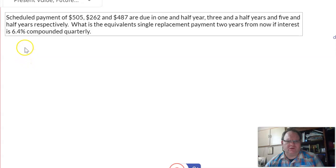To start this problem, we're going to use a timeline. The timeline is going to be five years long because this payment occurs at five and a half years from now.